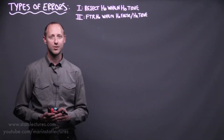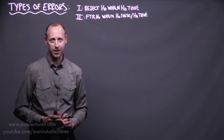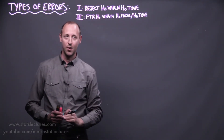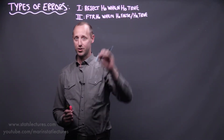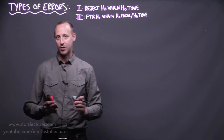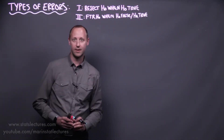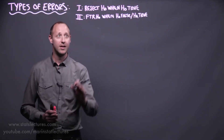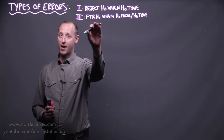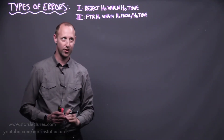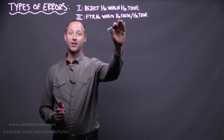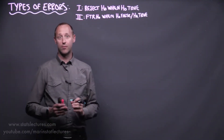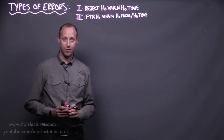The first one, which we label a Type 1 error, is where we reject our null hypothesis when in fact, in reality, the null is true and we shouldn't have rejected the null. The second type of error, we call a Type 2 error. This is where we fail to reject the null when in fact, in reality, the null is false or the alternative is true — so again, we should have rejected the null.